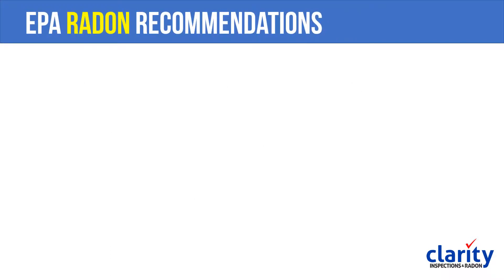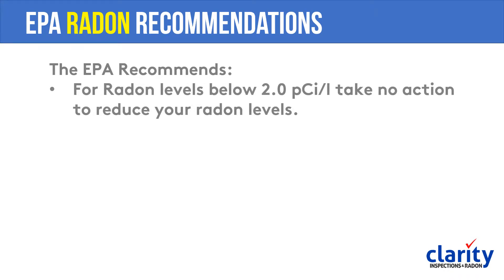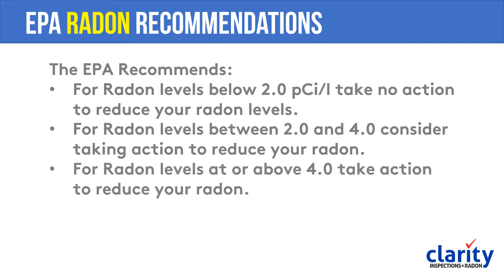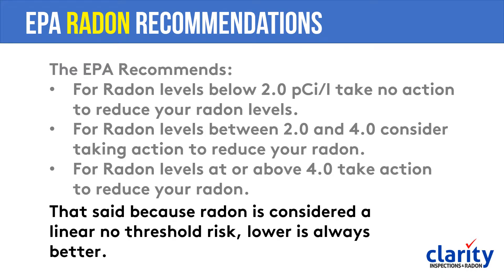What does the EPA recommend about different radon levels? They recommend that if your radon levels are below 2 picocuries per liter, take no action. If they're between 2 and 4, consider taking action. And if your levels are at 4 or above, take action to reduce your radon. It's worth noting that technically there's no safe level of radon, and lower is always better. Some people hire mitigation services even when levels are below 2, especially if children spend a lot of time in those spaces. These are federal recommendations, but your decision may be based on your own comfort level and budget.